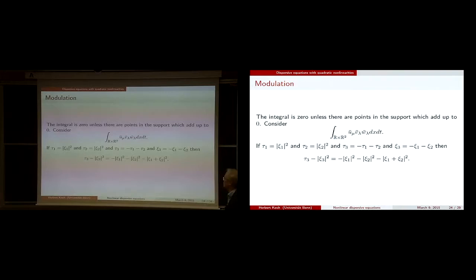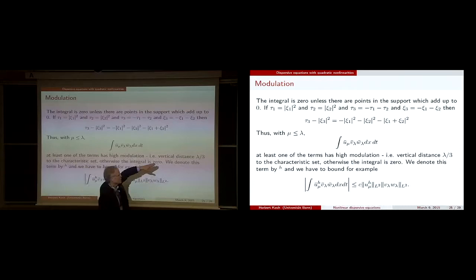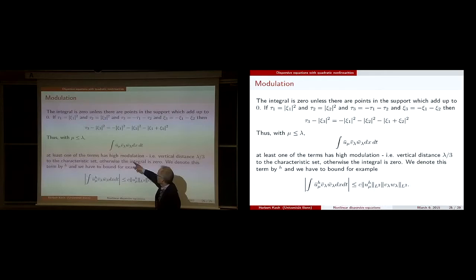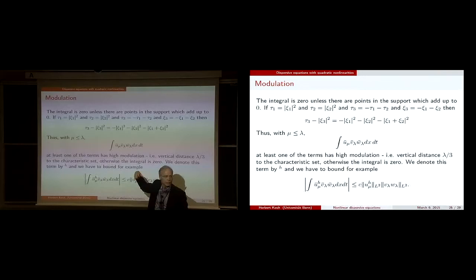Let's decompose. At least one of the terms has to have high modulation — large vertical distance from the parabola — of at least size lambda/3 times something. We order things according to the frequencies: since things have to add up to zero, the two largest frequencies have to be roughly the same; otherwise they couldn't add up to zero. So we are roughly in the setting of one low frequency and two large frequencies.